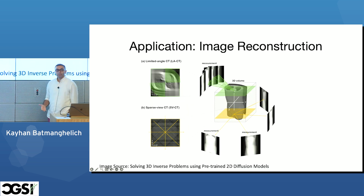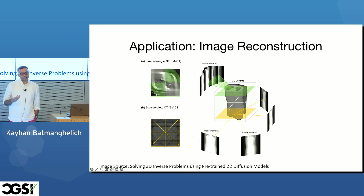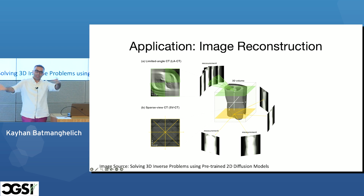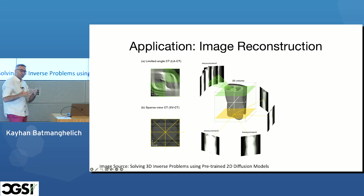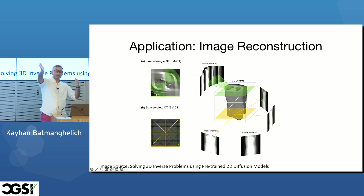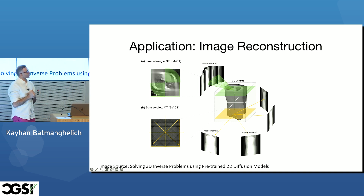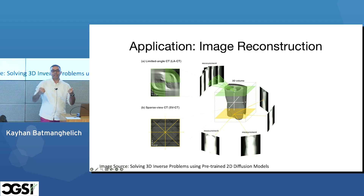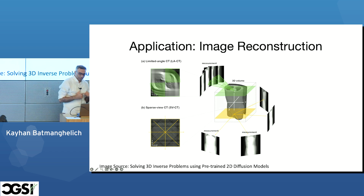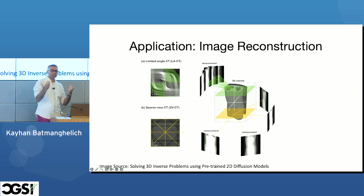Another application is image reconstruction. CT works by rotating a tube that emits X-rays around the patient at multiple angles. An interesting application is reducing the amount of X-ray by reducing the number of emission angles. A generative model can serve as an effective prior that helps reconstruct images from fewer angles. There are many other applications — these are just small examples of why we need generative models in medical imaging.